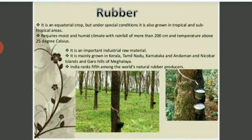Rubber is produced in Tamil Nadu, Kerala, Karnataka, Andaman and Nicobar Islands, and in the hills of Meghalaya.